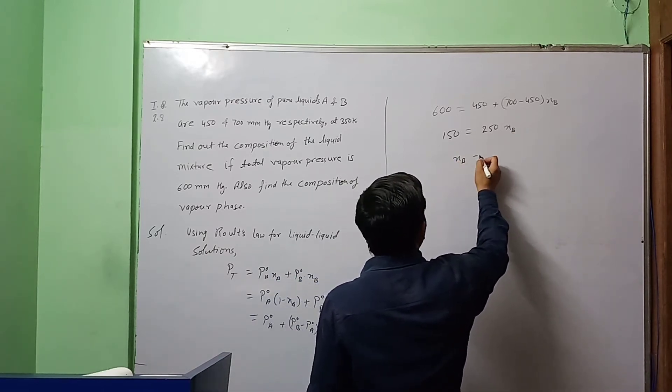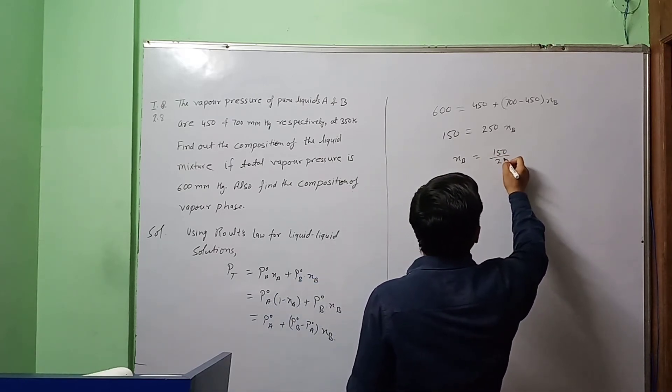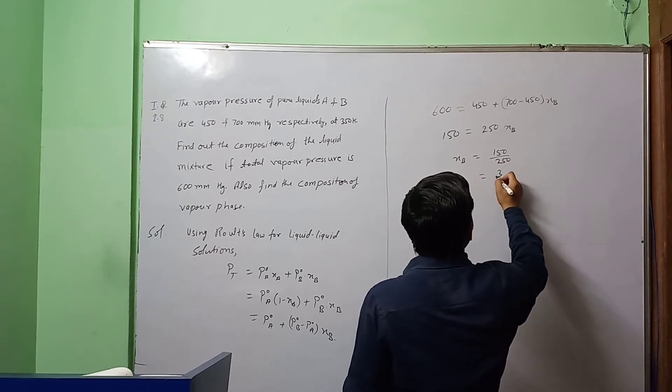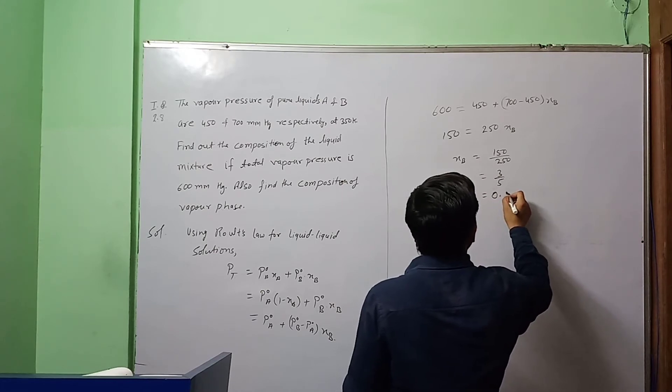XB equals 150 upon 250, that is 3 by 5, and it is equal to 0.6.